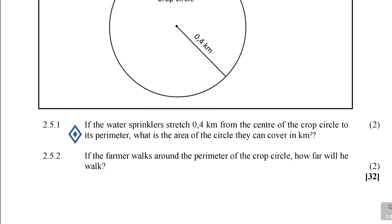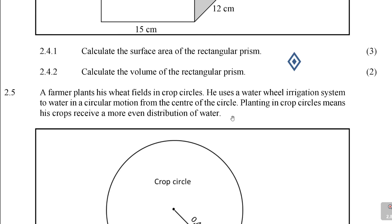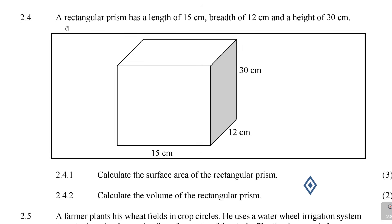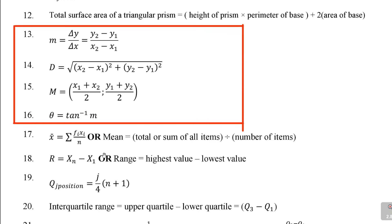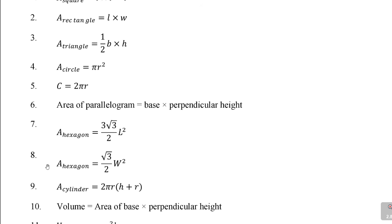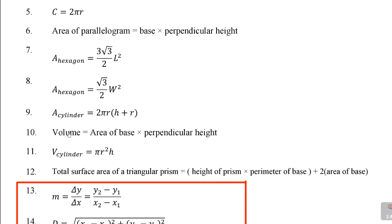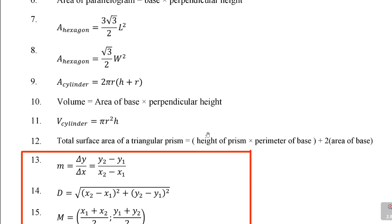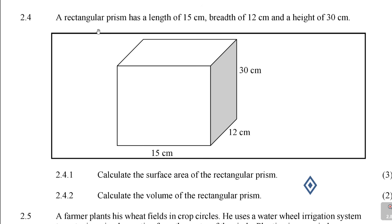All right. Now, to finalize question 2: a rectangular prism has a length of 15 centimetres, a breadth of 12 centimetres and a height of 30 centimetres. Whenever they are dealing with this section, we are looking at the formulas — area of the square, rectangle, triangle, circle, circumference, area of a parallelogram, hexagon, cylinder, volume. Now here they are doing a rectangular prism. Calculate the surface area of the rectangular prism.